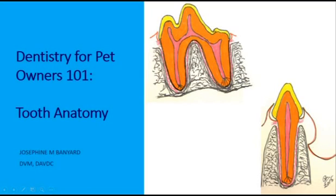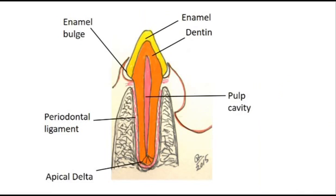Hi, this is veterinary dental specialist Joe Banyard, and I'm going to talk to you about tooth anatomy. In order to understand dentistry, you need to understand tooth anatomy. This is a diagram of a one-rooted tooth.